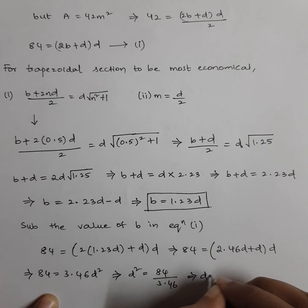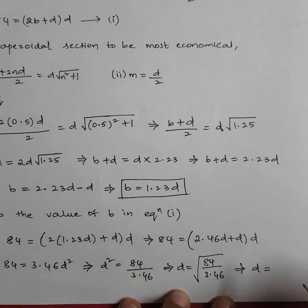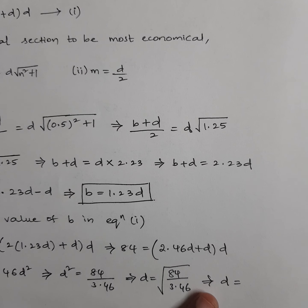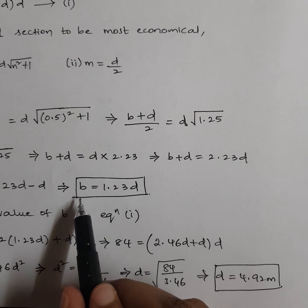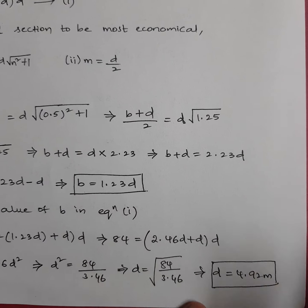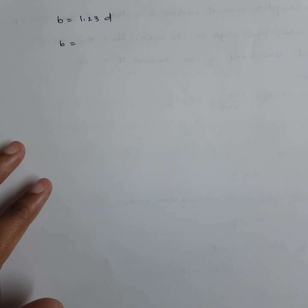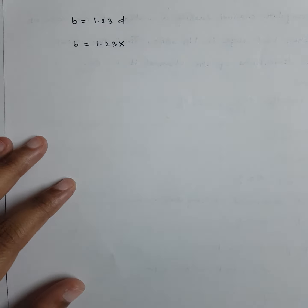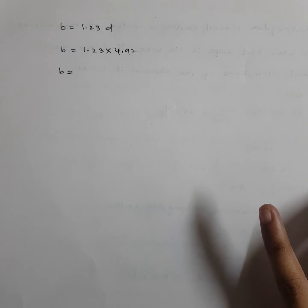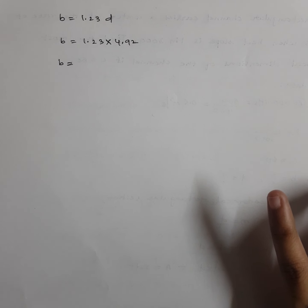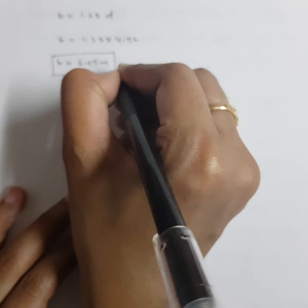Calculating D: √(84/3.46) equals 4.92 meters. Now using B equals 1.23D: B equals 1.23 into 4.92. Let's calculate the value of B.